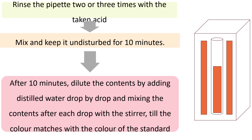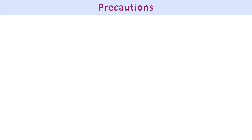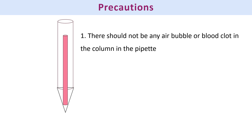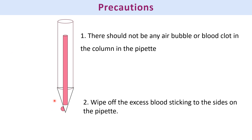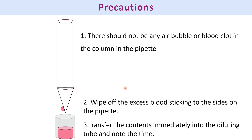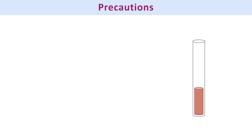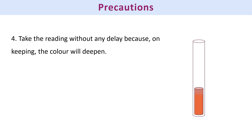Important precautions: when filling blood into the pipette, there should be no air bubble, as that interferes with the volume. Wipe off any blood drops sticking to the pipette. Transfer the contents immediately into the diluting tube and note the time — any delay causes the blood to clot inside the pipette. Take the reading without delay, because on keeping, the color tends to deepen.